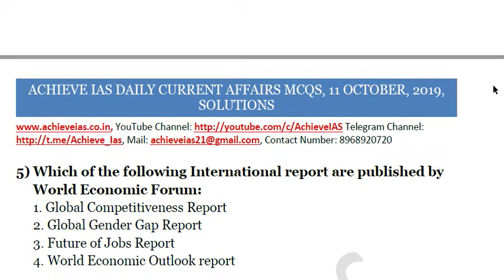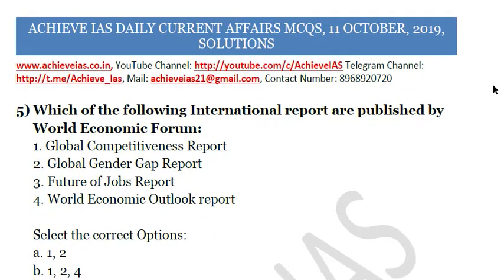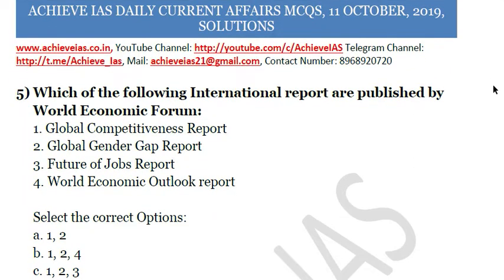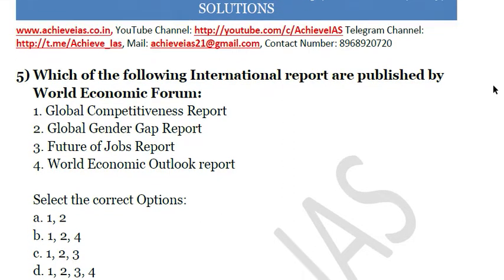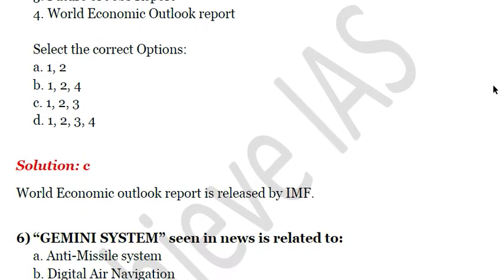The fifth question: 'Which of the following international reports are published by the World Economic Forum?' First: Global Competitiveness Report. Second: Global Gender Gap Report. Third: Future of Jobs. Fourth: World Economic Outlook Report. The correct answer is C — that is 1, 2, and 3 — because the World Economic Outlook report is released by the International Monetary Fund, not by the World Economic Forum.